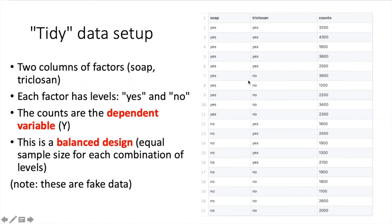I mentioned the term balanced design. That means that each combination of levels has the same number of observations. In this table, we can see that each combination of SOAP and Triclosan has five values. So this is what we would call a balanced design.